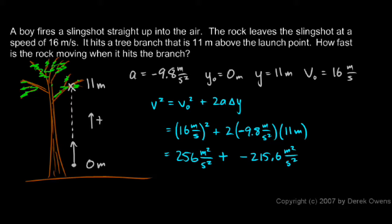So I've got 256 plus negative 215.6. Or you could think of it as 256 minus 215.6. And these are both meters squared per second squared, so I can combine them. They're the same type of thing. They're like terms. I just do the math. 256 minus 215.6. And I get 40.4 meters squared per second squared.